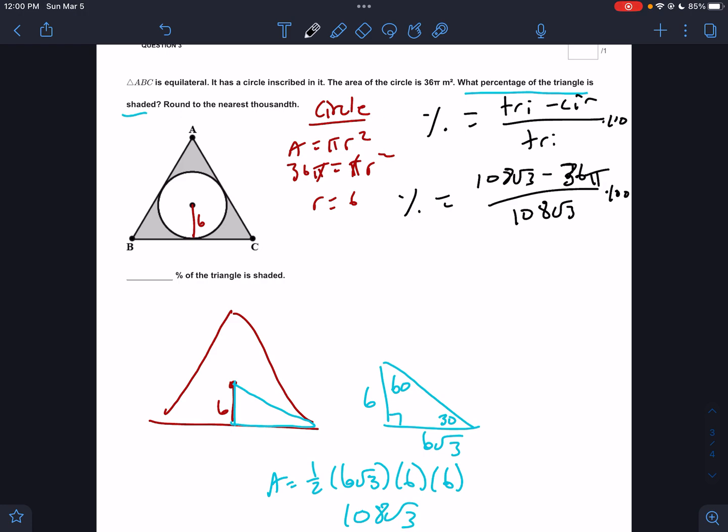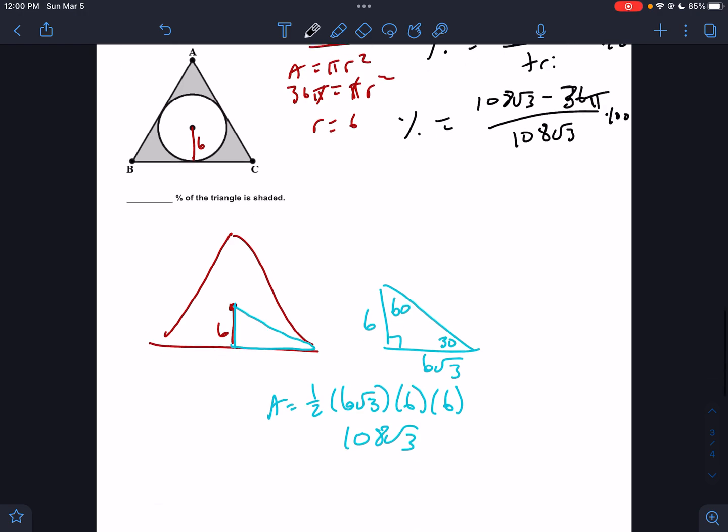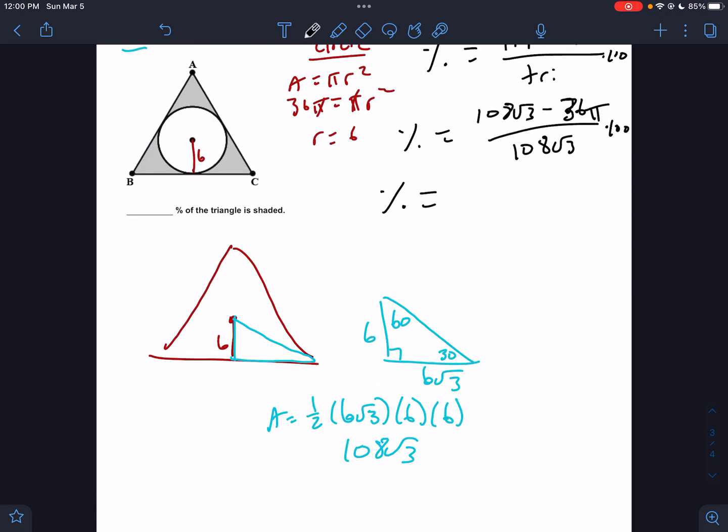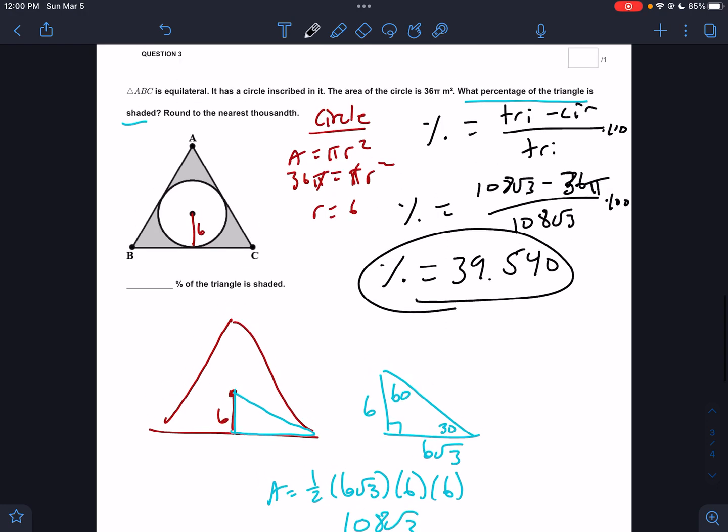Oh, I typed it in wrong, let me fix that. Times 100. Okay, and I get 39. So the percent shaded would be 39.540 if I'm going to the nearest thousandths.